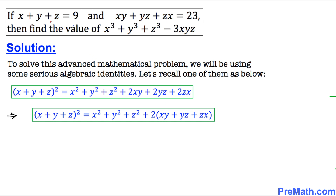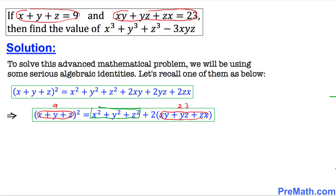Now we can start our solution process. We can see that x plus y plus z equals 9, so I'm going to replace that with 9. We also know that xy plus yz plus zx equals 23, so I'm going to replace that with 23. This way we can easily find the value of x squared plus y squared plus z squared.